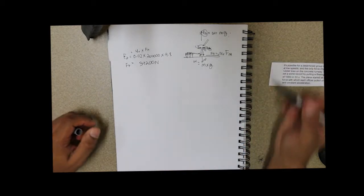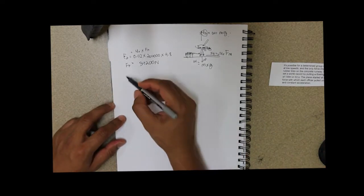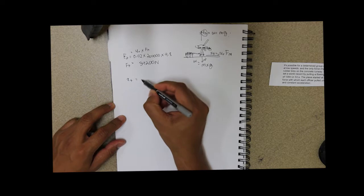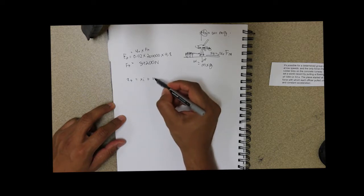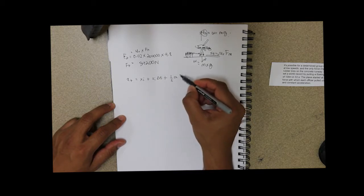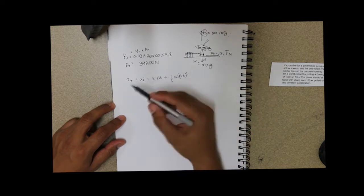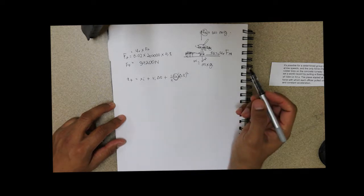So we can calculate our acceleration by using the position formula, which is position final equals position initial plus initial velocity times change in time plus half acceleration times change in time squared. So with this formula, we can basically calculate what our acceleration is.